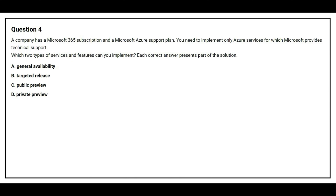Question number four: a company has a Microsoft 365 subscription and a Microsoft Azure support plan. You need to implement only Azure services for which Microsoft provides technical support. Which two types of services and features can you implement? Option A: general availability. Option B: targeted release. Option C: public preview. Option D: private preview. The correct answers are Option A — general availability — and Option C — public preview.